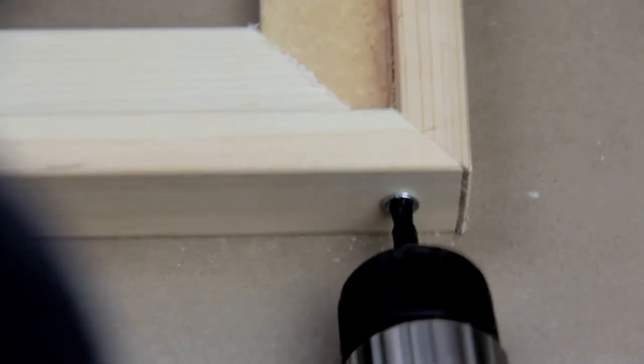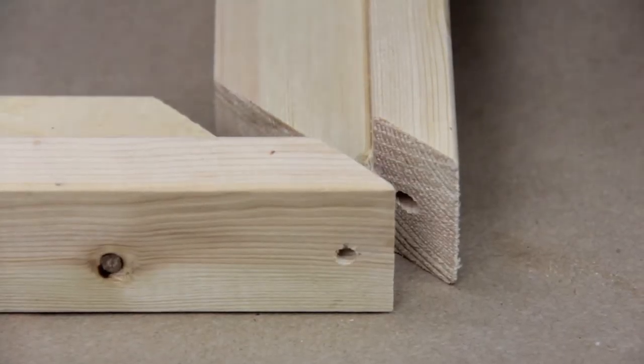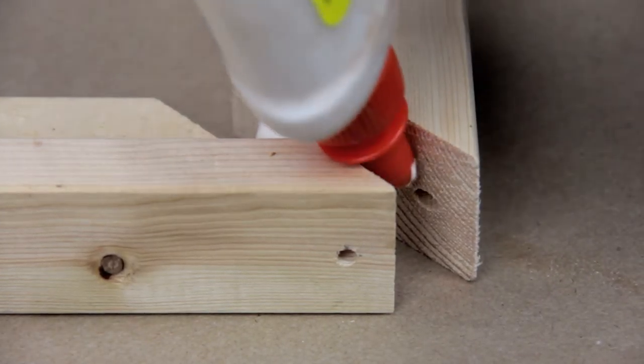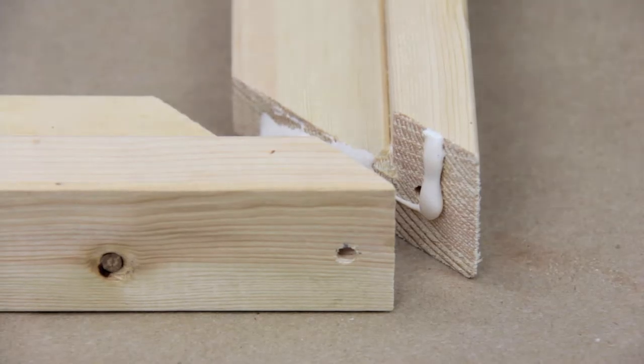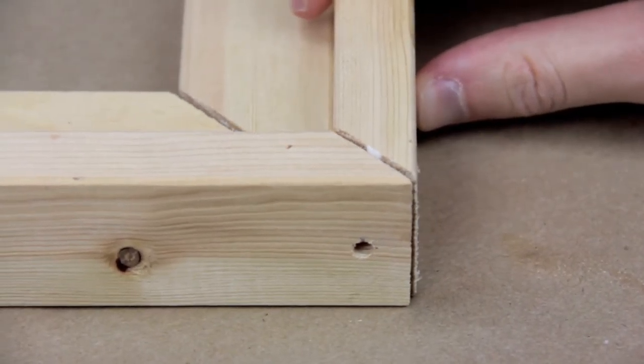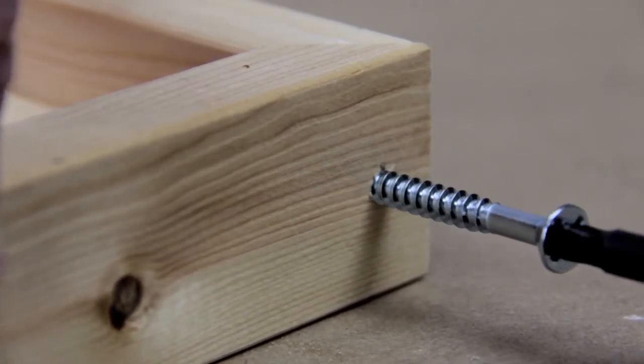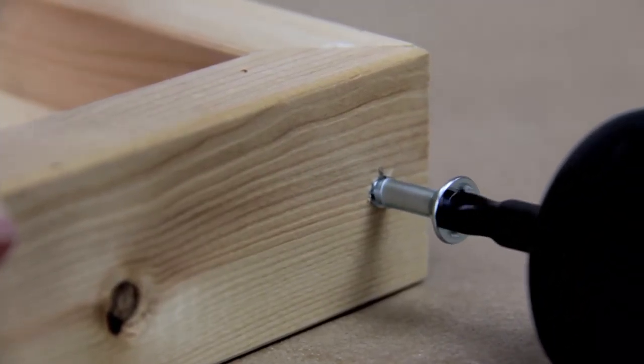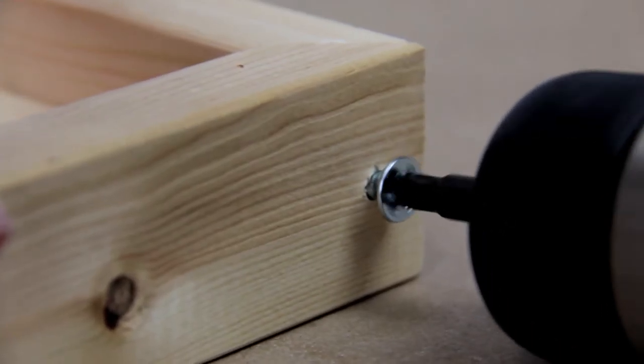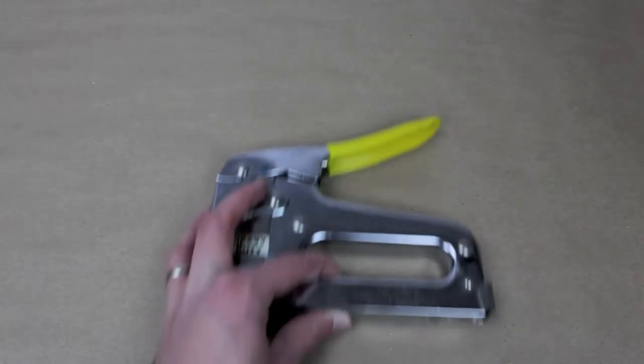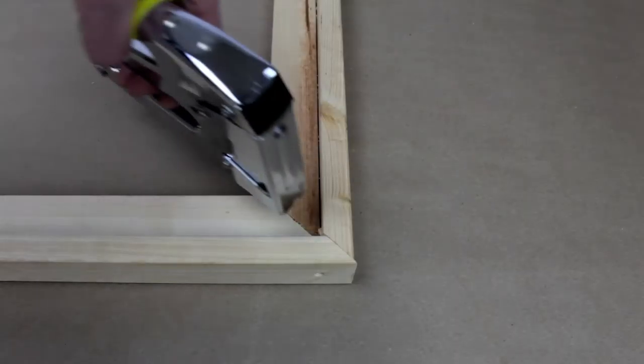Repeat this for every corner. Next, you'll need a staple gun to strengthen the join in the corners of the frame.